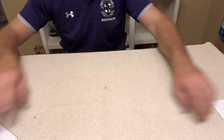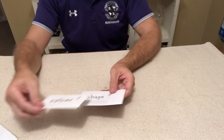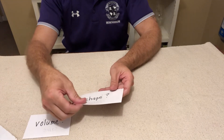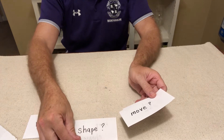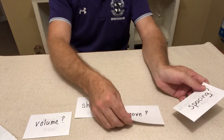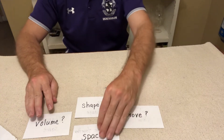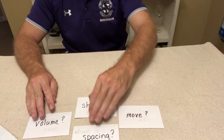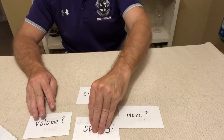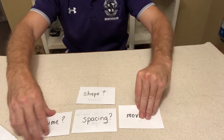We're thinking about the questions introduced in a former activity. We're thinking about volume, shape, movement, and spacing. Those are the things we think about when we talk about solids, liquids, and gases and the different states of matter.